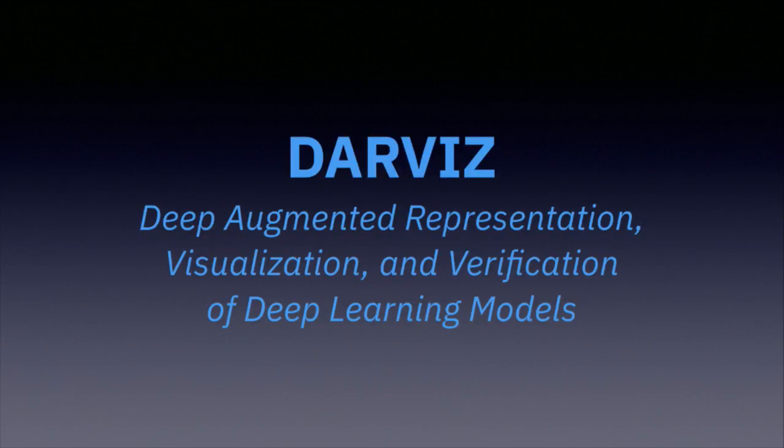I'm Rob High, the CTO for IBM Watson. I've been with the team for about four and a half years, helping drive technical strategy, aligning across the IBM Cloud portfolio, trying to make sure we've got good synergies with what we have and where we're going. Today we're talking about deep learning behind systems like IBM Watson, specifically IBM Research's DARVIS — Deep Augmented Representation, Visualization, and Verification of Deep Learning Models.